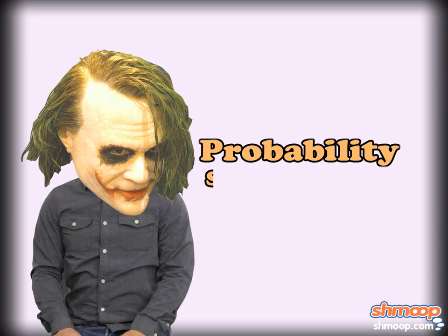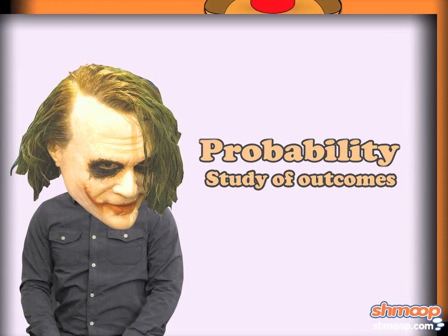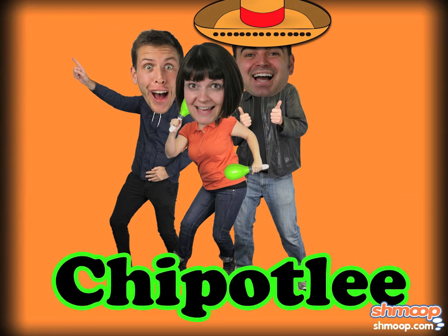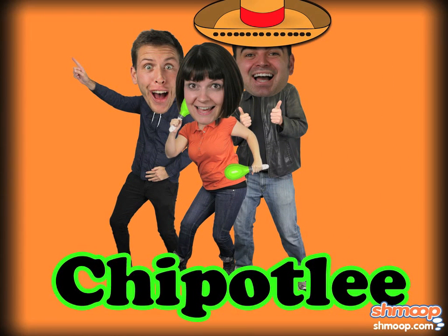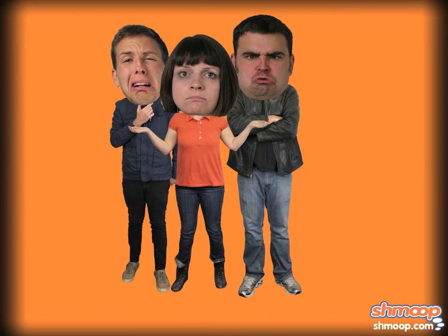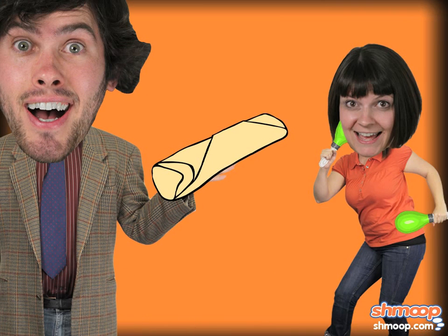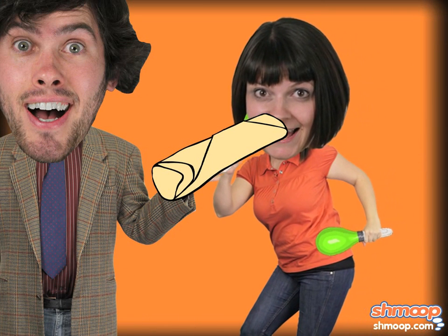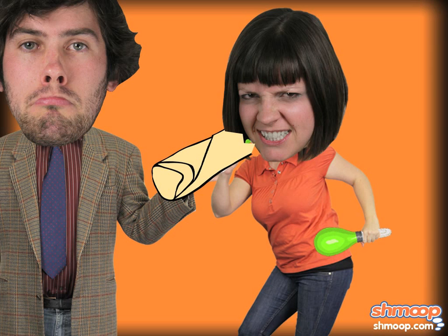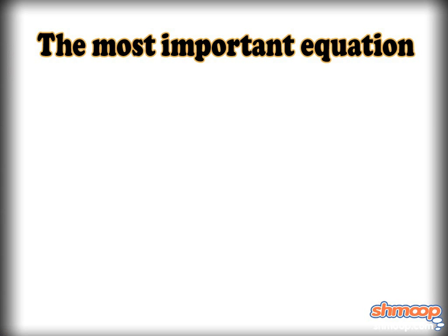Probability is the study of outcomes. For example, one outcome is that we'll go to Chipotle in the next two days; another outcome is that we won't. However, given our penchant for eating burritos, the probability may be higher than average for us here at Shmoop. But let's look at some real numbers.